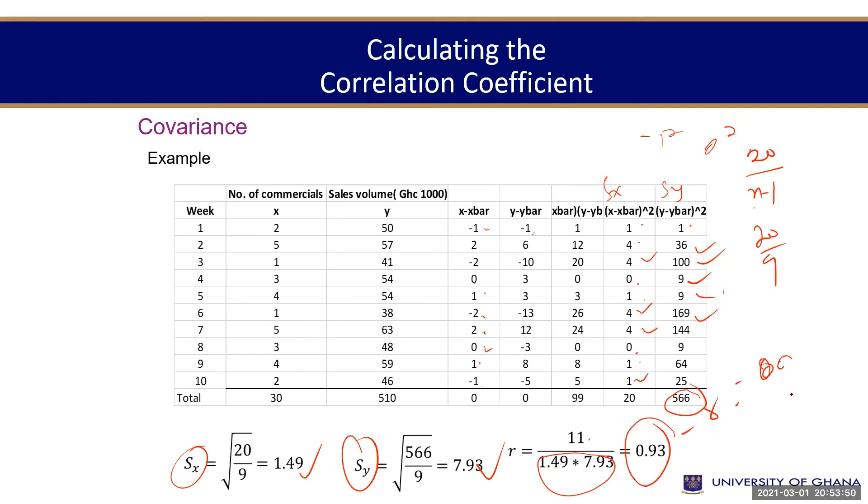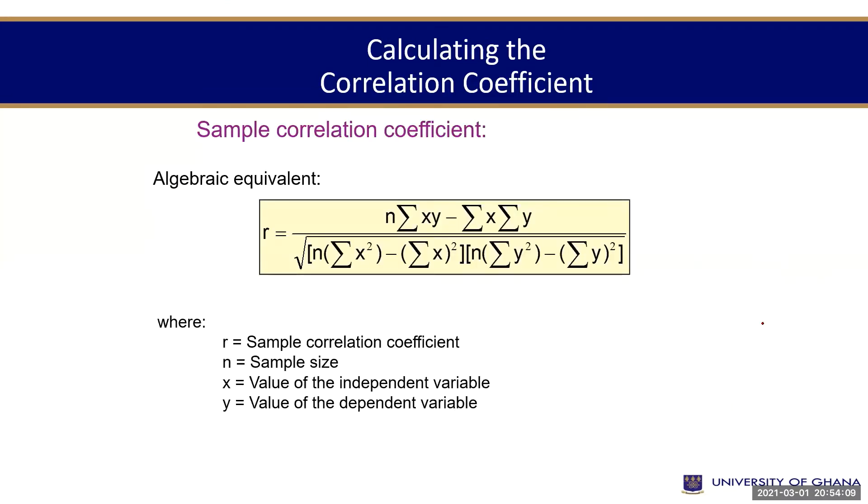In this case, r is 93%. It means that there is a strong relationship between the number of commercials we undertake and sales, 93%. That is it. Don't worry about the algebraic equivalent. I'm not going to ask you. Any question?